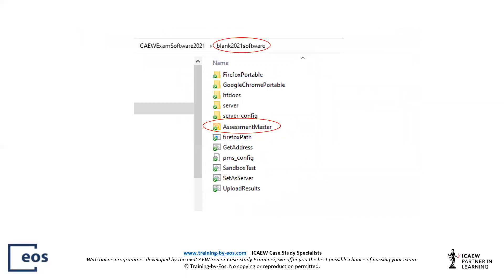Once you have the blank 2021 software folder on your computer, you can access the CBE anytime via Assessment Master. You do not need to be connected to the internet. Complete the download before moving on to the next video, where I will show you how to use ICAEW's CBE with our mock exams.